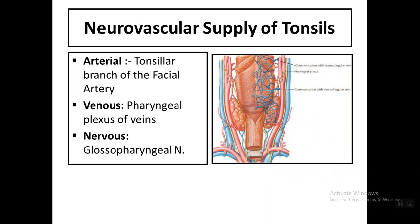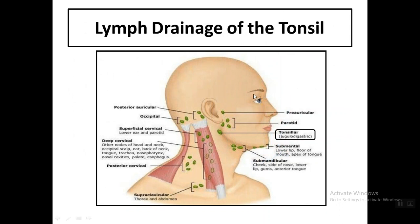The neurovascular supply of the tonsils: the arterial supply is mainly the tonsillar branch of the facial artery. Venous drainage is via a venous plexus. The nerve supply is through the glossopharyngeal nerve (ninth cranial nerve). Lymphatic drainage goes to the deep cervical lymph nodes, specifically the jugulodigastric (tonsillar) lymph node at the angle of the mandible.